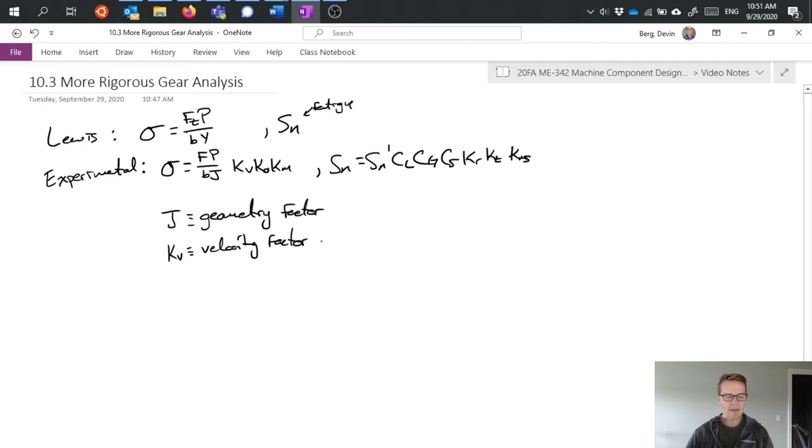We have kv, which is a velocity factor, figure 15.24. This factors in the fact that these teeth, when they come into contact, they're moving with some velocity. So you have a little bit of an impact loading there. Take some of that into account, and it's dependent on the velocity, the speed, the rotational speed of our gears, and also the precision of our gears.